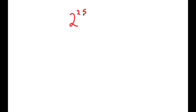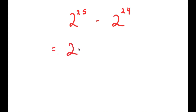In this video, I'm going to solve the problem 2 to the power of 25 minus 2 to the power of 24. To solve this, I'm going to start by rewriting 2 to the power of 25 as 2 to the power of 24 plus 1, so I have this minus 2 to the power of 24.